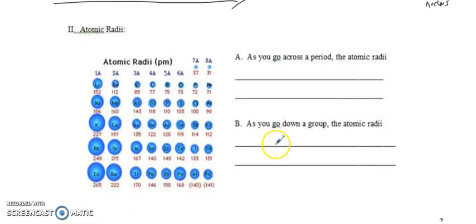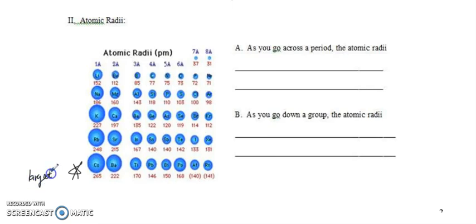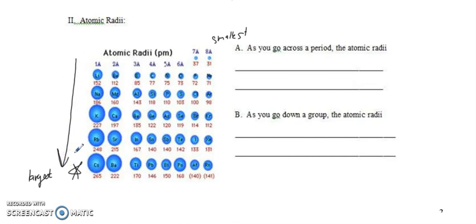Now let's look at atomic radii. Here is a chart of atomic radii — I basically took the D and F blocks out. So here's column 1, column 2, column 3, 4, 5, 6, 7, 8, or 13 through 18. What trend do you see? Where are the largest atoms located? If you said down to the left, you are correct. So the largest atoms are down to the left and the smallest atoms are up top. Going down a group, size increases, and going to the left, size increases.